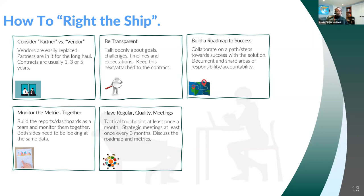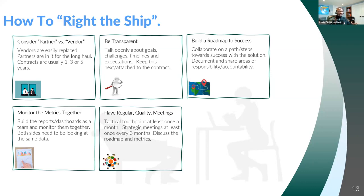Have regular and quality meetings. I suggest tactical touchpoints at least once a month — these are shorter calls, and if you can't meet this month, meet next month. Then you want strategic meetings at least once every three months. During those strategic meetings, you're going to look at the metrics and review the report you built together. You're going to check accountability against the roadmap and discuss goals, challenges, timelines, and expectations — really talking about how this partnership is going and what needs to be done to get it back on track.